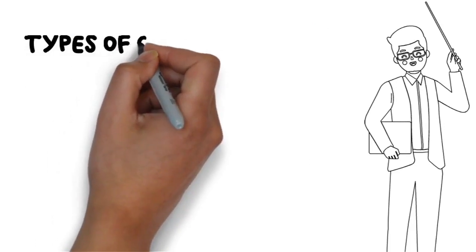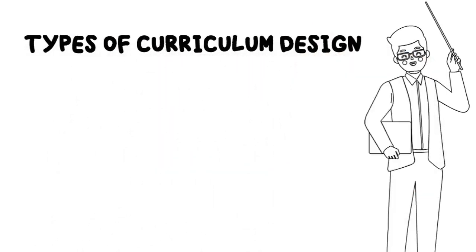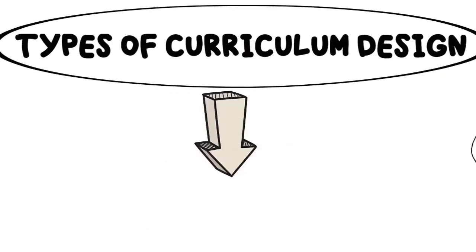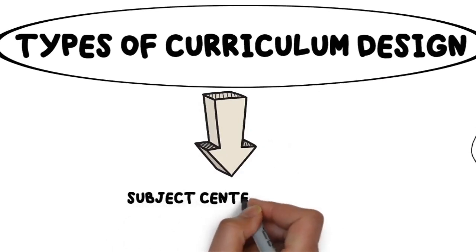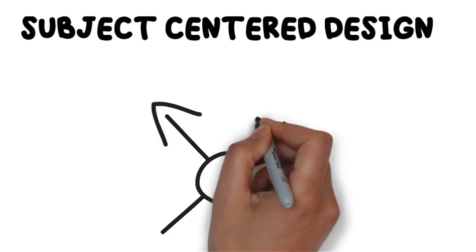There are three types of curriculum design models. These are subject-centered design, learner-centered design, and problem-centered design. Subject-centered design focuses on the content of the curriculum. It corresponds mostly to the textbook written for the specific subject. Thus, this type of design aims for excellence in the subject matter content.